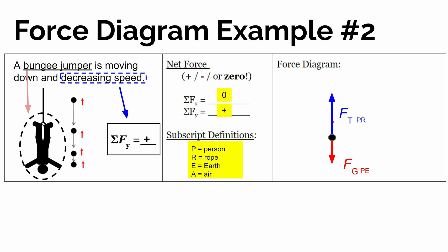We're going to label this the force of tension on the person by the rope. And this could be enough to explain why the bungee jumper is slowing down or decreasing in speed, because tension — which is pulling back against the direction of motion — is bigger than gravity, which is trying to speed them up.